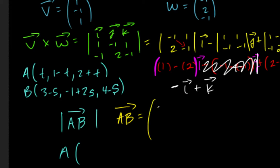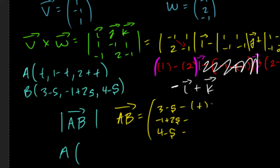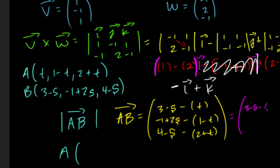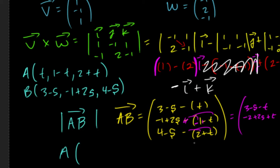To find vector AB, we take the coordinates from B minus the coordinates from A: (t, 1 - t, 2 + t). Simplifying, the first component is 3 - s minus t, the second is negative two plus two s plus t, and the third is two minus s minus t.